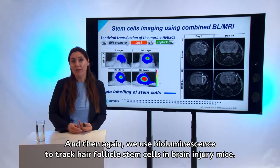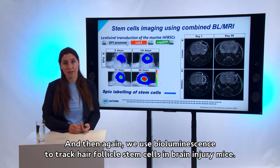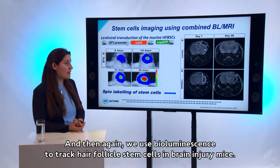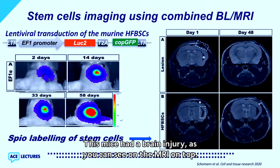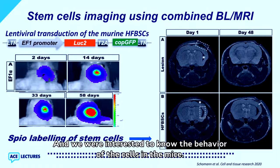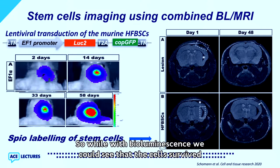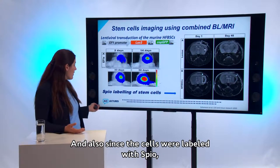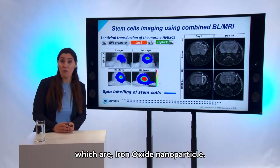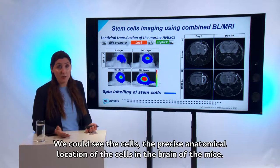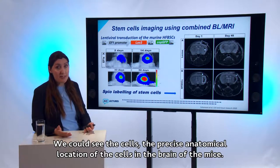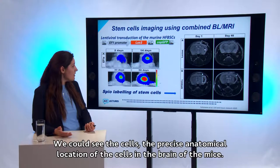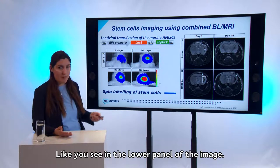We also used bioluminescence to track hair follicle stem cells in brain-injured mice. These mice had a brain injury visible on MRI as a lesion, and we were interested in the behavior of the injected cells. With bioluminescence, we could see that the cells survived in the animal for a long time. Since the cells were also labeled with SPIO — superparamagnetic iron oxide nanoparticles — we could additionally determine the precise anatomical location of the cells in the brain using MRI, as shown in the lower panel.